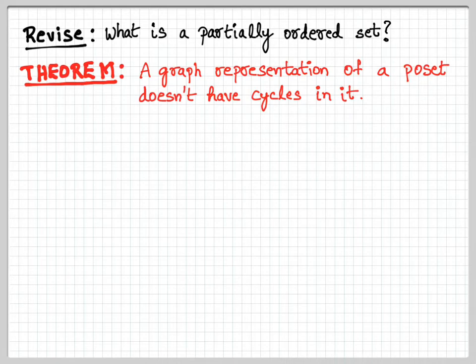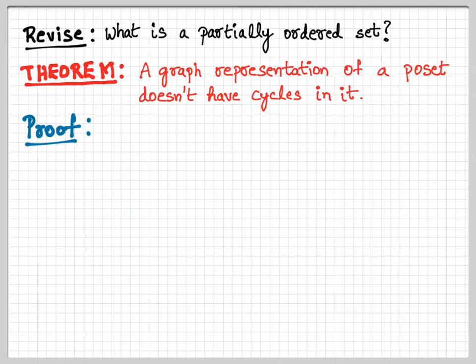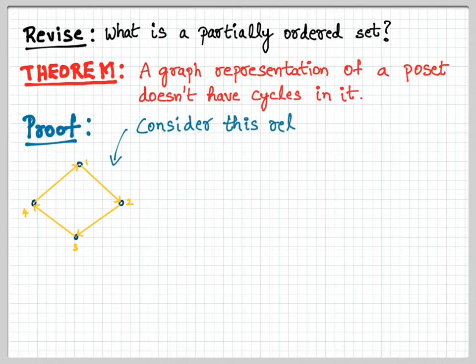Let's prove this by contradiction — you should be able to prove it yourself. Let's look at the previous example with four nodes and a cycle. Consider this relation: is it transitive? Definitely not — so it is obviously not a poset on its own. But the question we're asking is slightly different: what if you are given a relation that contains a four-cycle?